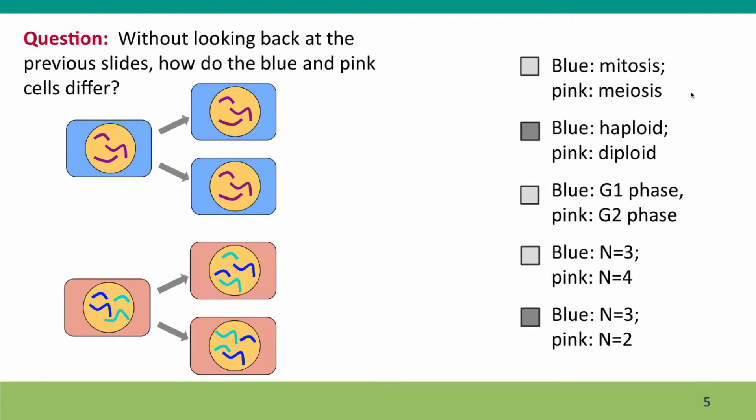So there's two correct answers. First, an answer about ploidy. The blue cells are represented as haploid. The pink cells are represented as diploid.